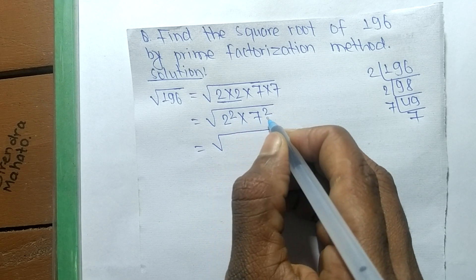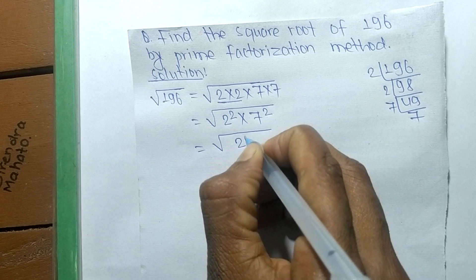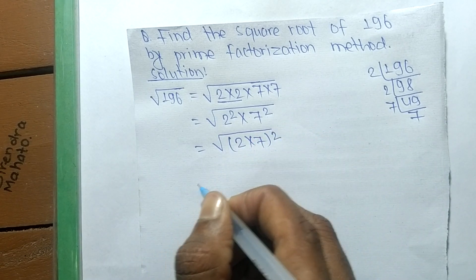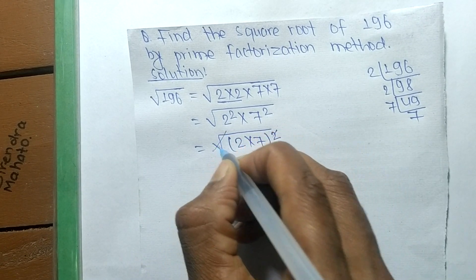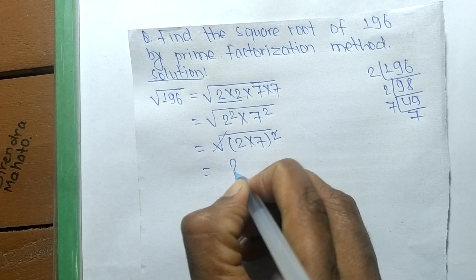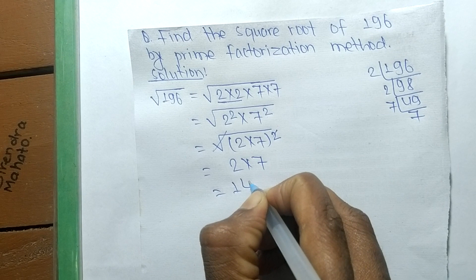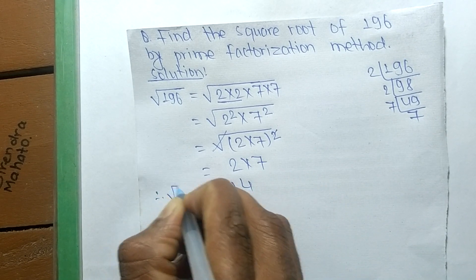So it can be 2 into 7 whole square. A square and a square root cancel, and the remaining is 2 into 7, so it is equal to 14.